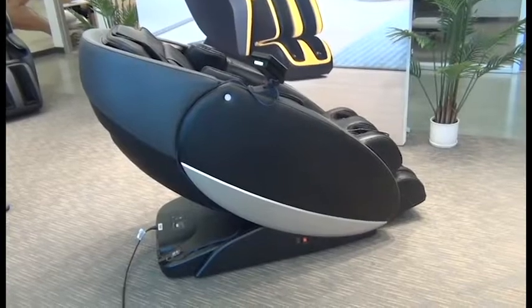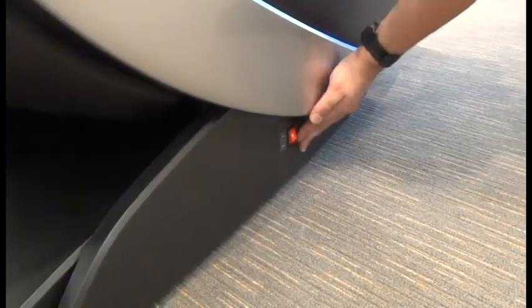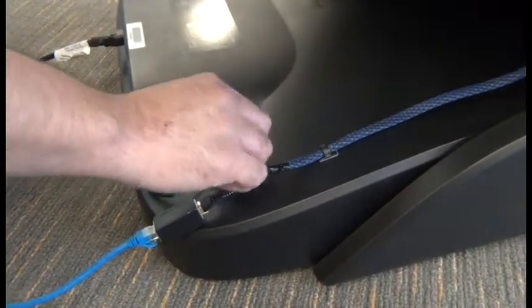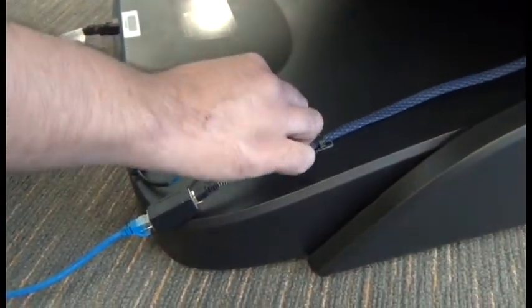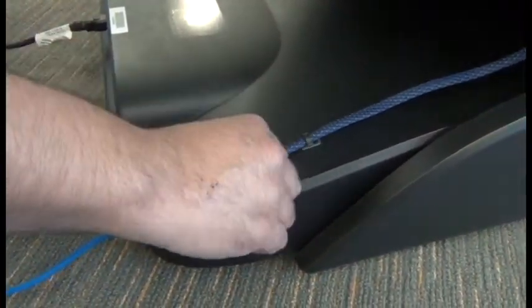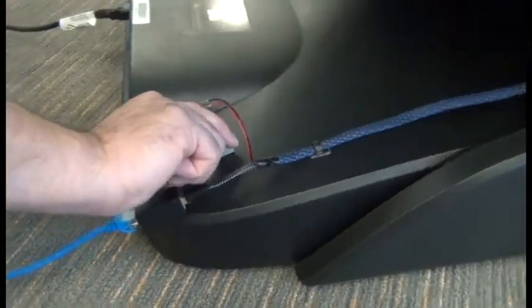To prepare to troubleshoot a Novo XT2 commercial version or Novo XT Pro connected to a kiosk system, first power off the chair, then open up the orange levers in the inline connector and disconnect the kiosk wires from the inline connector.